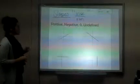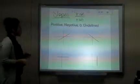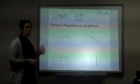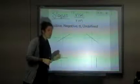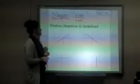We're looking at the different types of slopes. You can have a positive slope, a negative slope, a slope of zero, and an undefined slope.